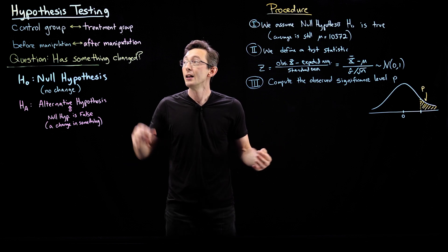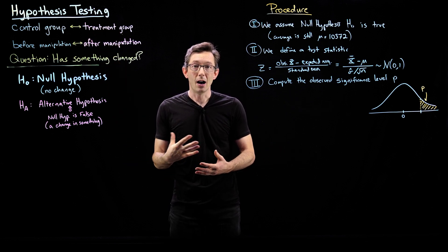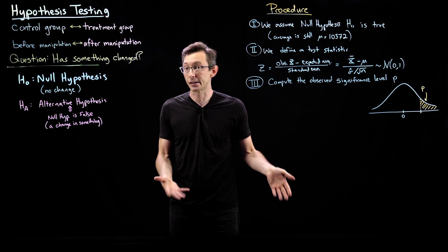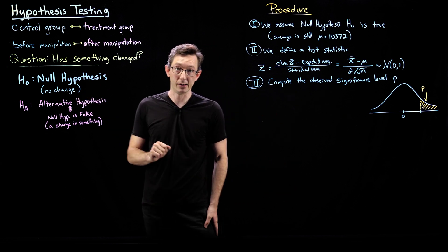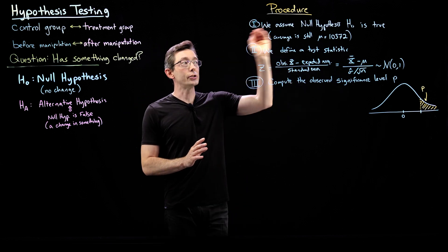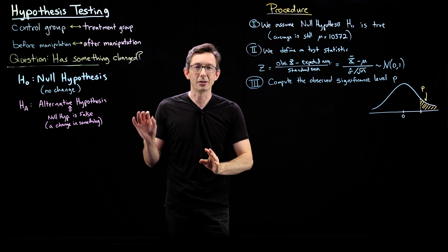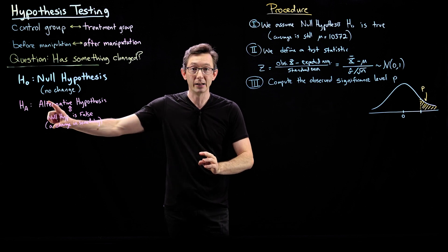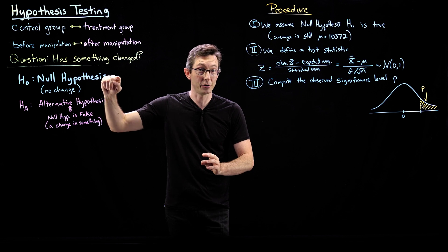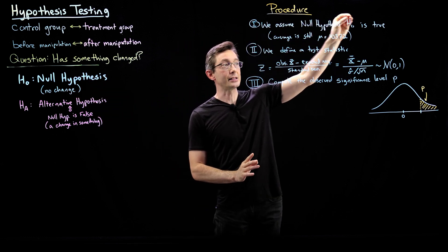There's randomness in the world. Maybe your observed outcome is just within the expected range of variability you would expect in a statistical process. That's the null hypothesis. So the procedure is you assume the null hypothesis is true. Remember in probability, it's sometimes harder to compute the probability of something, and sometimes easier to compute the probability that that thing is not true. That's what the null hypothesis is.